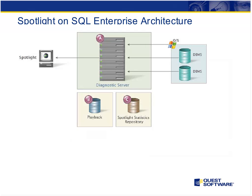Looking at the architecture more closely: the diagnostic server is marked as A. B is a playback database — a SQL Server relational database implementing a star schema — that stores information for populating the GUI in a historical context. Not every DBA can know when a performance problem will arise. The diagnostic server collects data 24x7, and using the playback database for up to a week in the past, you can go into Spotlight and review what occurred even when you weren't there to see it yourself.